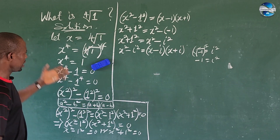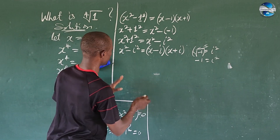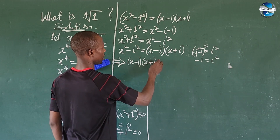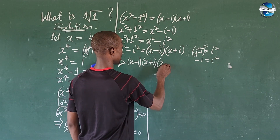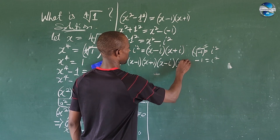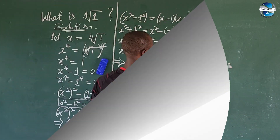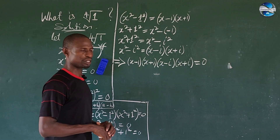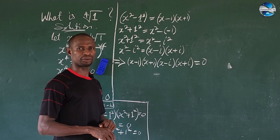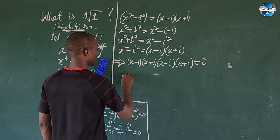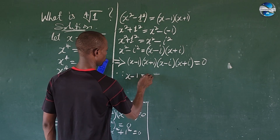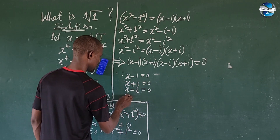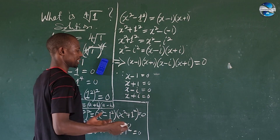We succeeded in simplifying both parts. Bringing everything together, this now implies: (x - 1)(x + 1)(x - iota)(x + iota) equal to zero. We cannot look for our value of x from this expression. We have four values of x here. Setting each factor equal to zero according to the zero product rule gives us: x minus one equals zero, x plus one equals zero, x minus iota equals zero, and x plus iota equals zero.